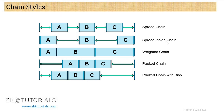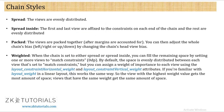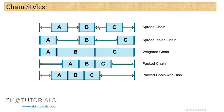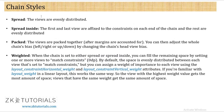Spread chain: the views are evenly distributed. The space between them is equal. The size of each view is the rectangular area occupied by that view class — the view may render differently, but the rectangular area it occupies is what matters. The space remaining in the width is divided equally, so the views are evenly distributed.